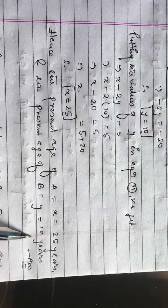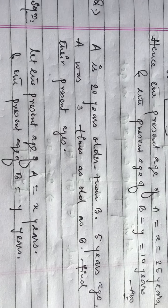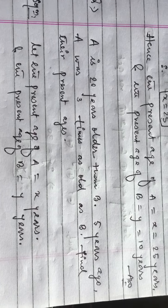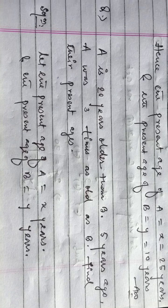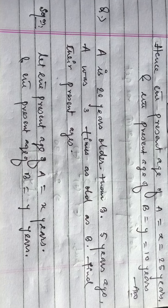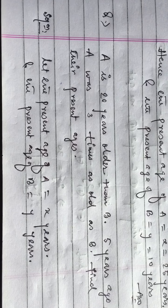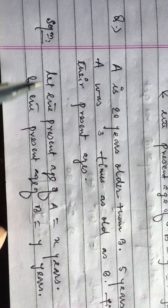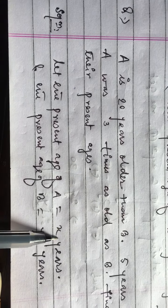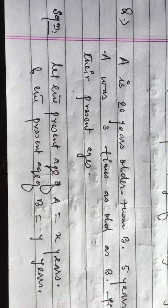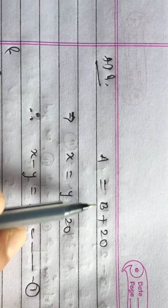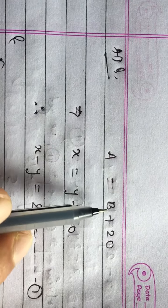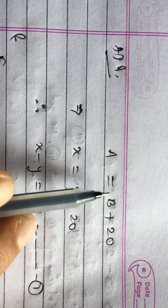Hence the present age of A is 25 years and the present age of B is 10 years. That is the answer. Now see one more question: A is 20 years older than B. Five years ago, A was three times as old as B. Find their present ages. Again we are going to find the present ages. Let the present age of A be x years and the present age of B be y years. A is 20 years older than B, meaning B is 20 years younger than A.